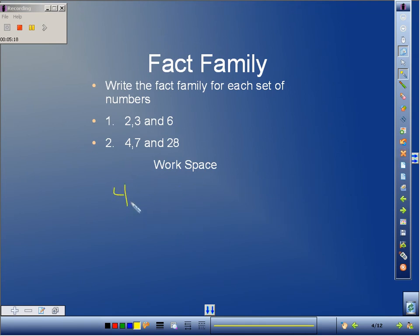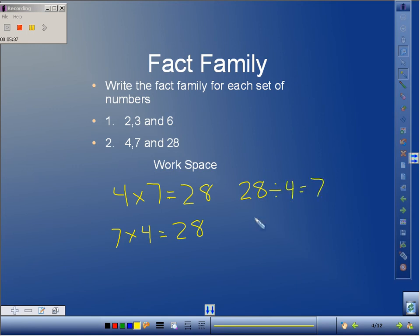Now let's move on to problem number 2. This fact family we're using the numbers 4, 7 and 28. So let's start with multiplication. 4 times 7 equals 28 and we'll do 7 times 4 equals 28. For the inverse operation we'll do 28 divided by 7 equals 4. There's our fact family for 4, 7 and 28.